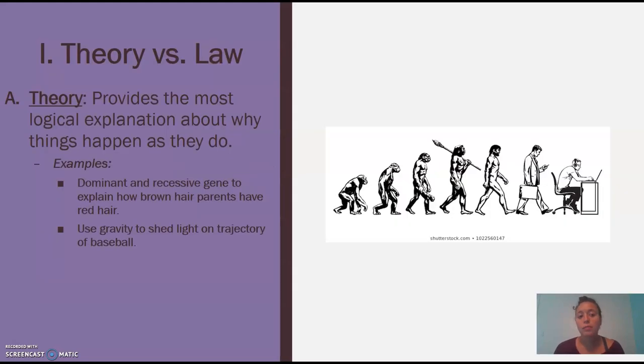Okay, so let's start off talking about theory versus law. So a theory and a law both use the scientific method to come to that conclusion. Just so you know, you're going to have a hypothesis and you're going to have the same results over and over again. That's what makes you come up with these. But anyway, so theory is going to provide the most logical explanation about why things happen as they do. So this word is so important, the word why. It provides the most logical explanation about why things happen as they do.